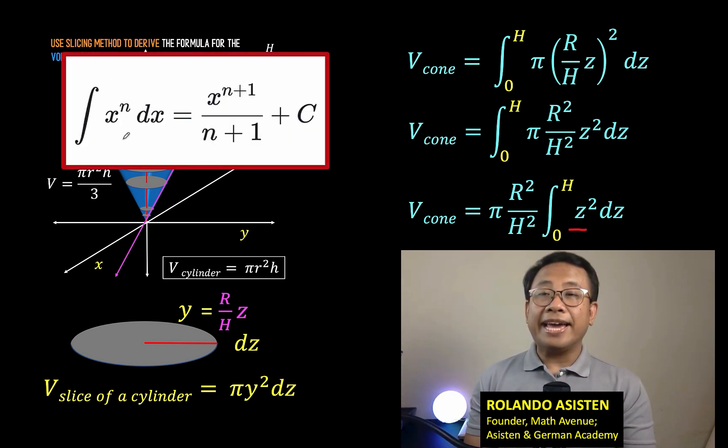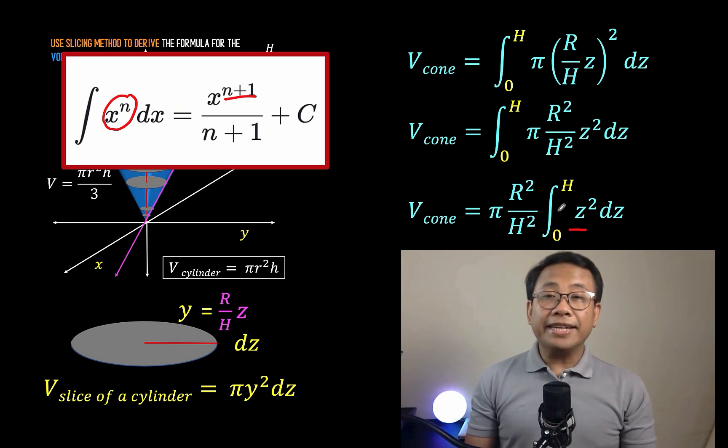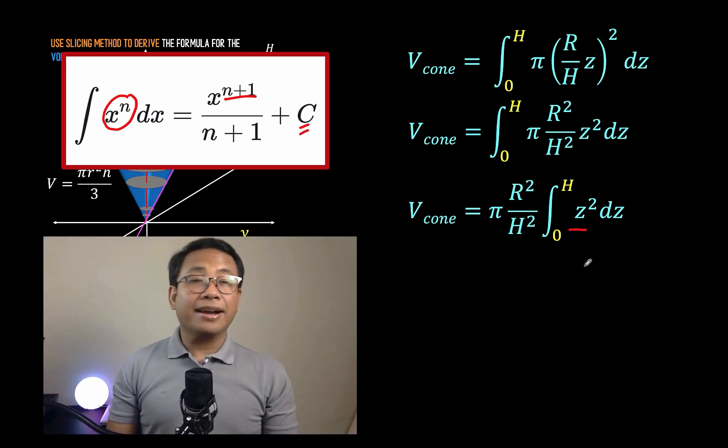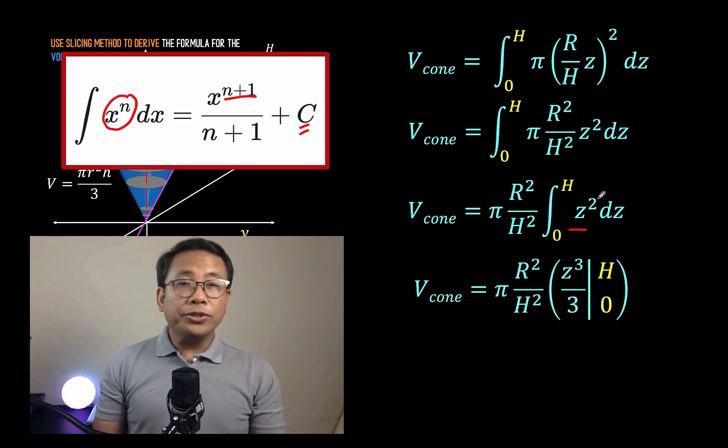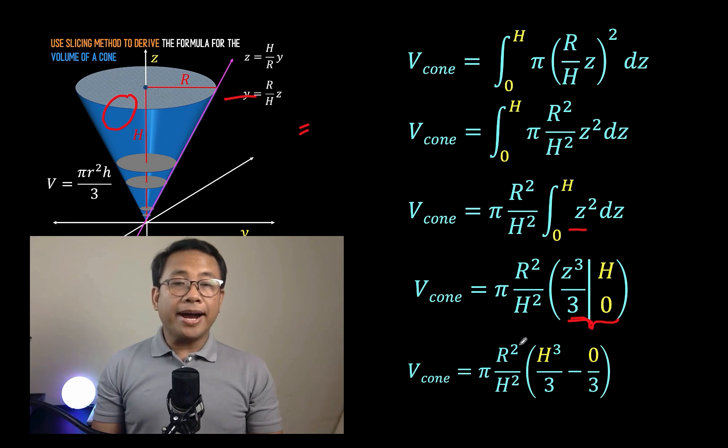The antiderivative of x raised to n dx is equal to x raised to n plus 1 over n plus 1 plus a constant. Since we are doing definite integration here, we'll not be including this constant. So we now have z raised to 2 plus 1, that is z³ over 3, and we will evaluate that from 0 to H. Then evaluating this part, we copy the constant π R² over H², then substitute H to z to have H³ over 3 minus substitute 0 to z to get 0³ over 3.